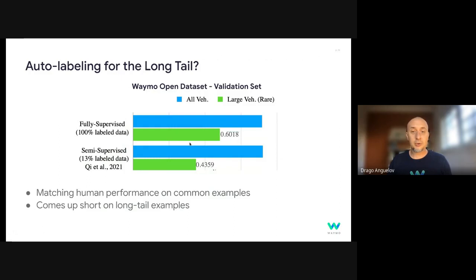So at the top, you have the performance here of a model that is trained with all the Waymo Open dataset in the standard way. So, of course, it gets certain performance on all vehicles and on large vehicles. Here on the bottom is a system where we use 13 percent of labeled data. We train the off-board auto-labeling system. We complete the other 87 percent of sequences using that system.